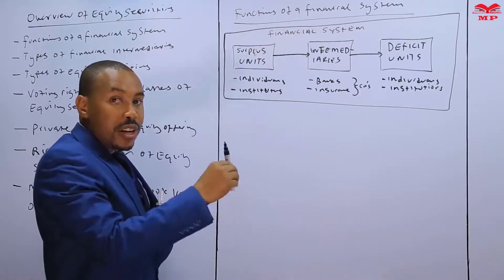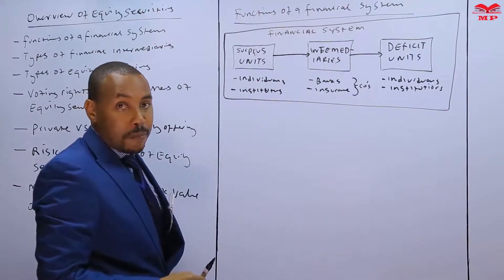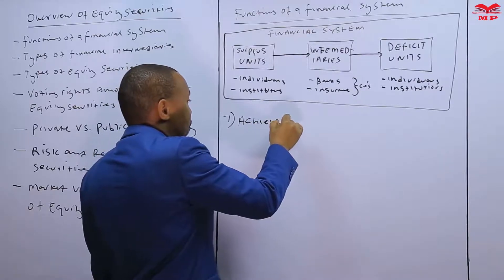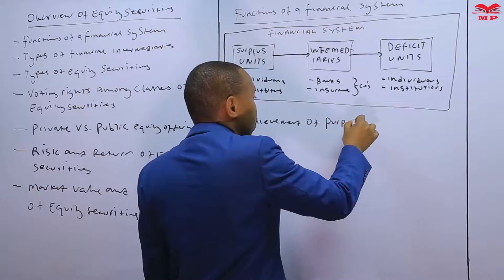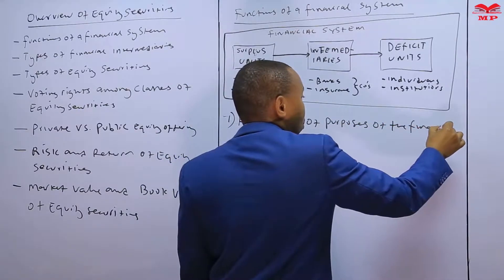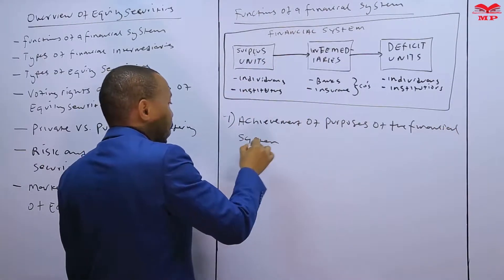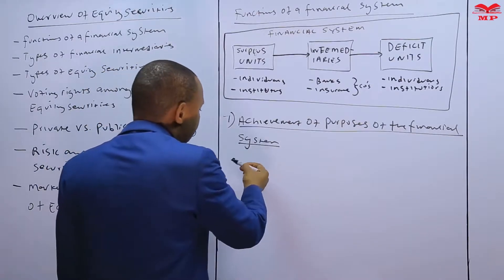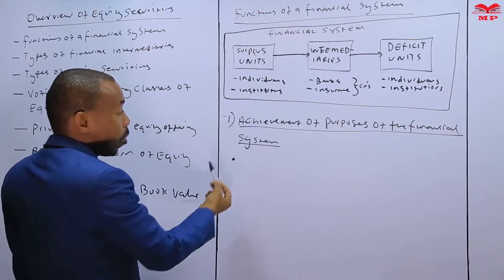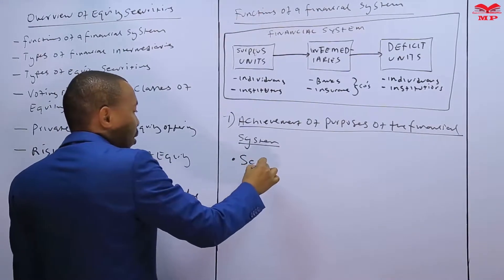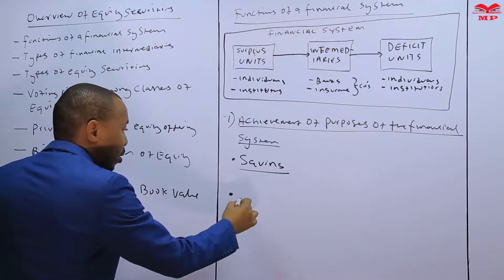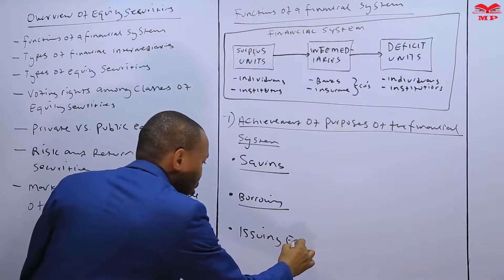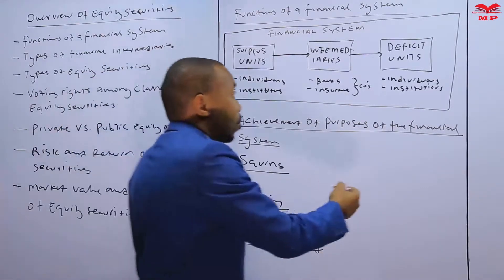Now that we've defined the financial system, we need to understand its functions — the achievement of purposes of the financial system. The financial system exists to achieve certain purposes. The first is saving, the second is borrowing, the third is issuing equity, and finally risk management.